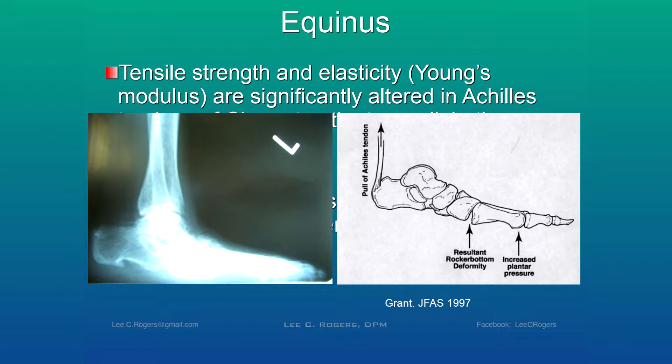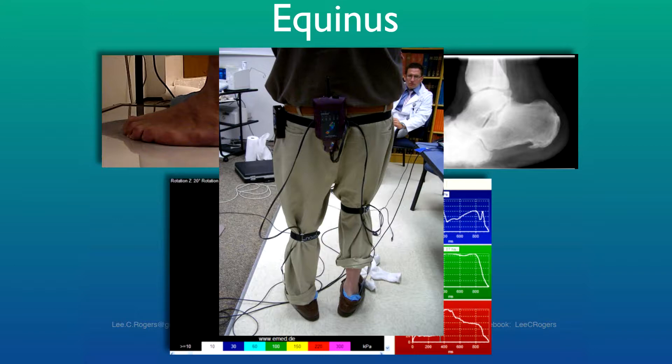Here's another patient standing on an ultrasound — we're doing a study to increase the fat pad. You can see the heel is off the ground, and you can see the darkness of the Achilles tendon pulling on the posterior tuber of the calcaneus. The component of equinus — which comes from equine, from horses walking on their toes — means that a tight Achilles tendon has to be addressed in any type of management of the Charcot foot.